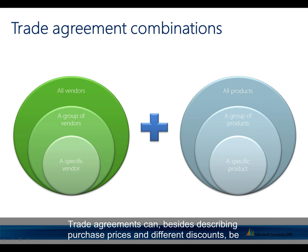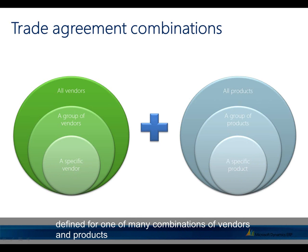Trade agreements can, besides describing purchase prices and different discounts, be defined for one of many combinations of vendors and products, defining how generic the trade agreement can be applied.